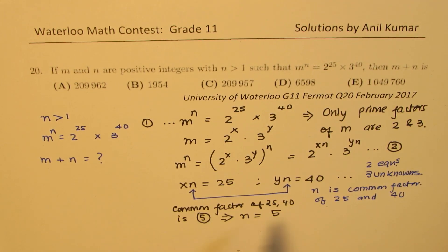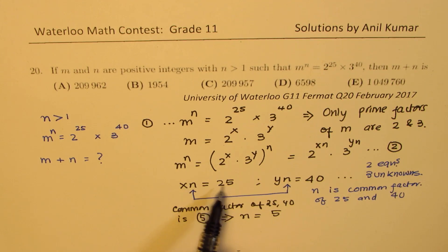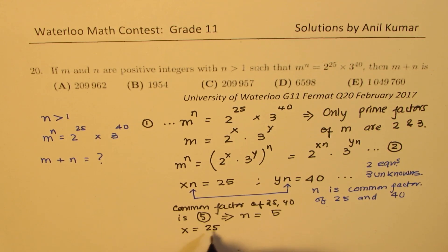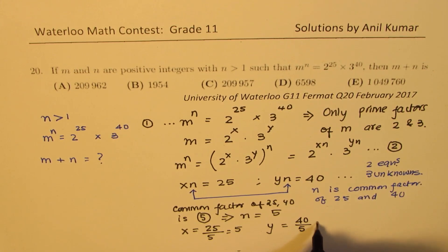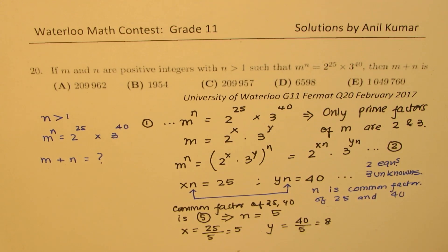So we get n as 5. And now we can solve what is x and what is y. So we have x as 25 over 5, which is 5. And we have y as 40 over 5, which is 8. So we get the values of x and y.